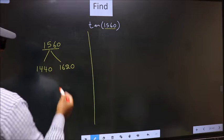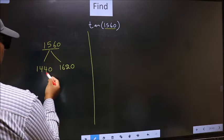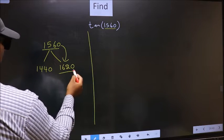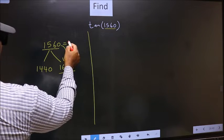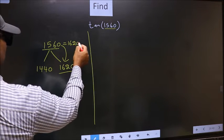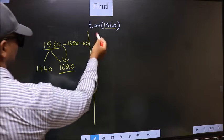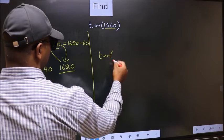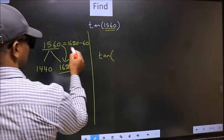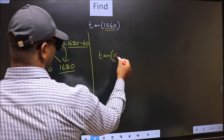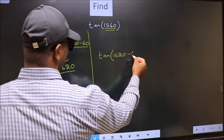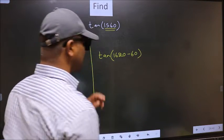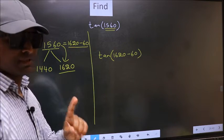Next, 1560 is close to which number? This is close to 1620. So in place of this, now we should write 1620-60. So this will become tan. In place of this, we should write this 1620-60. This is your step 1.